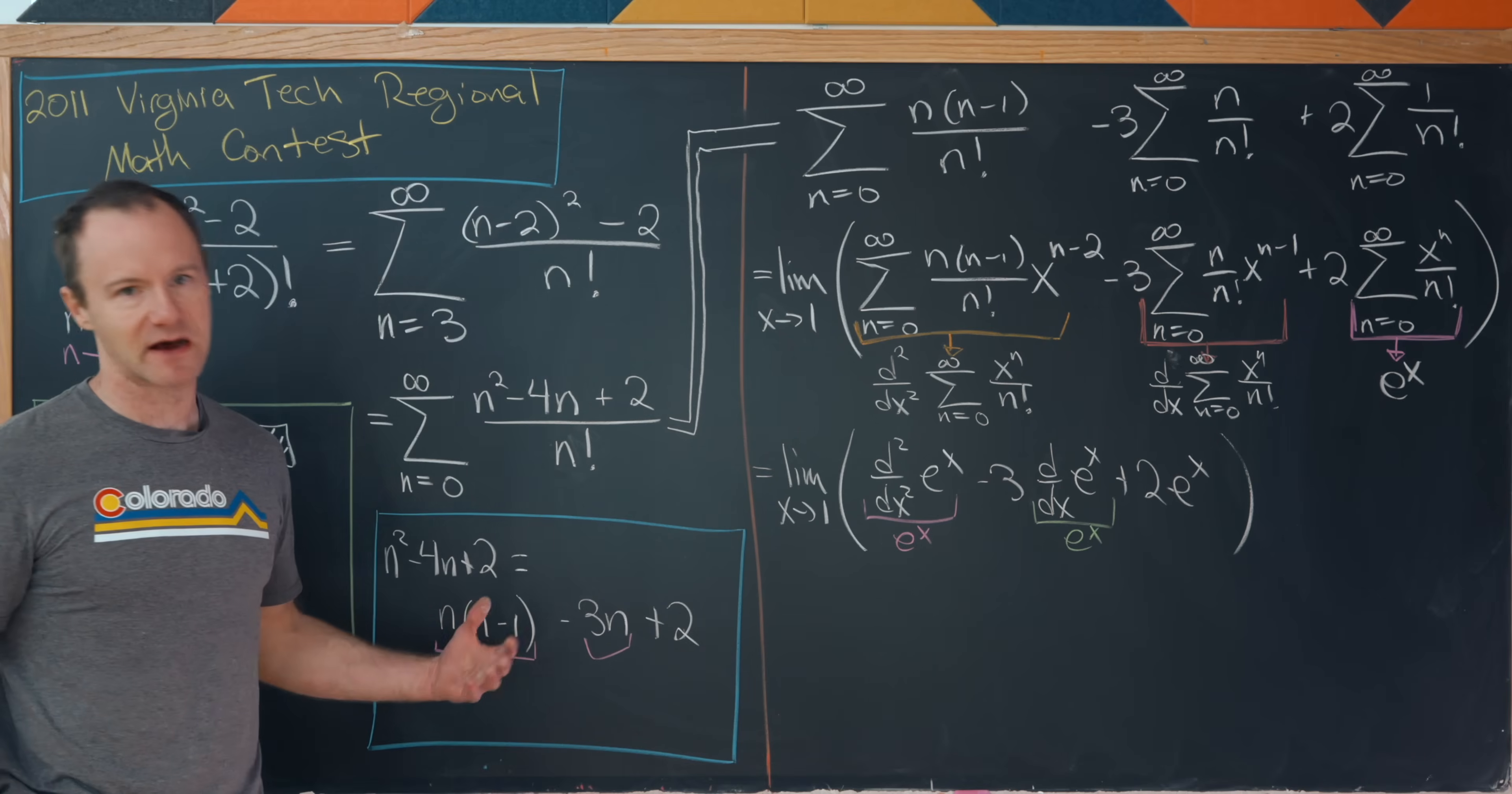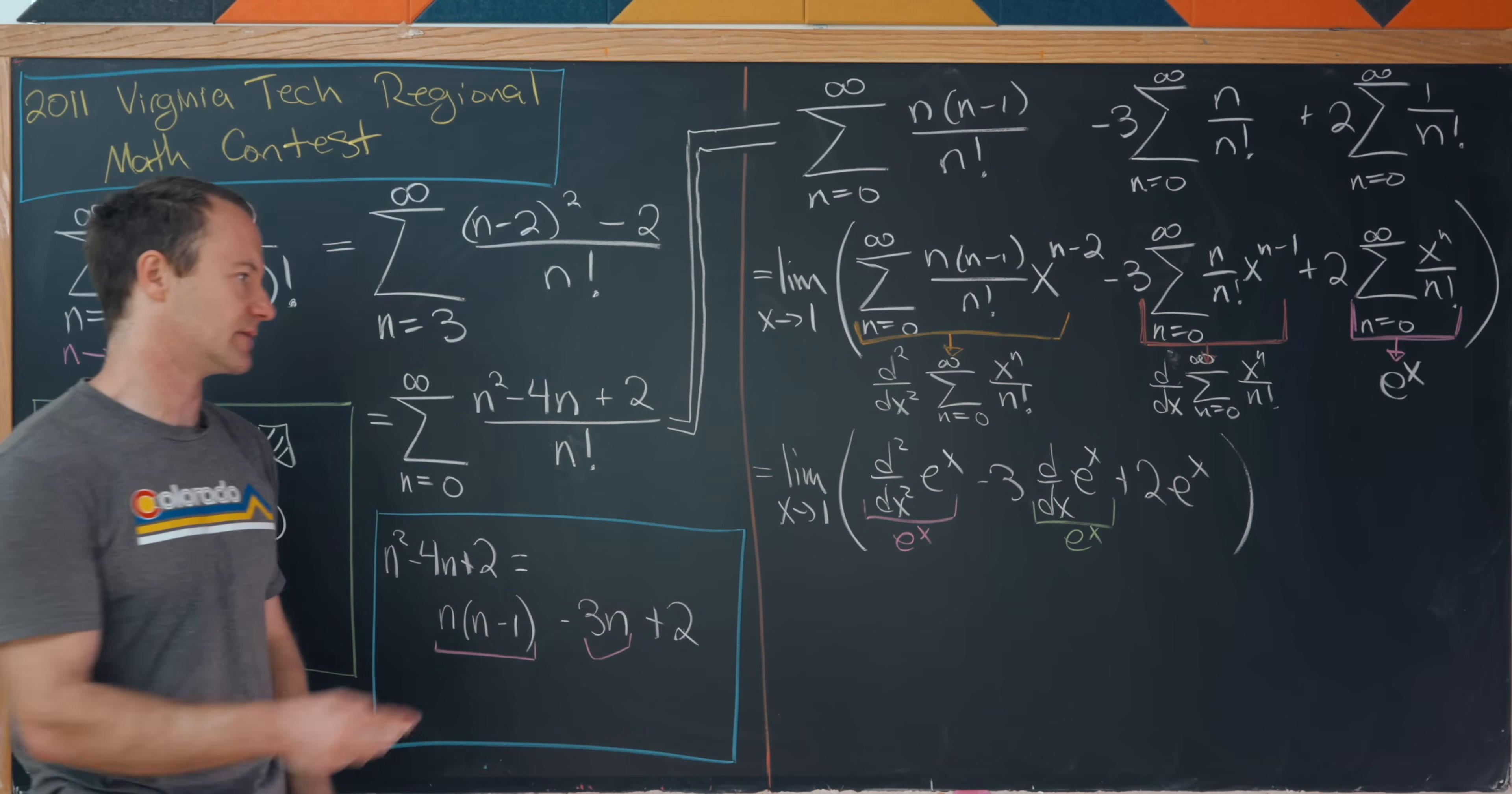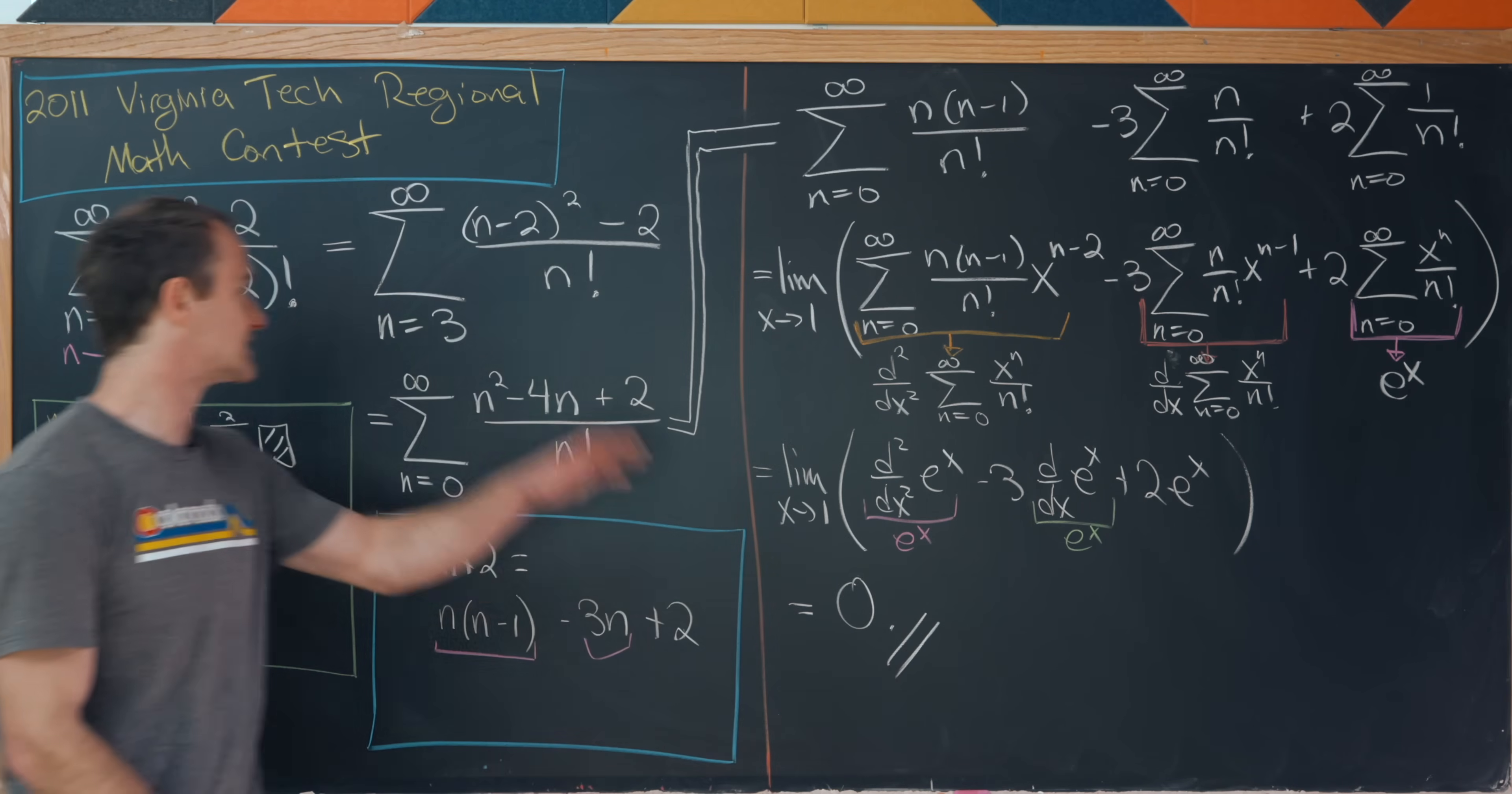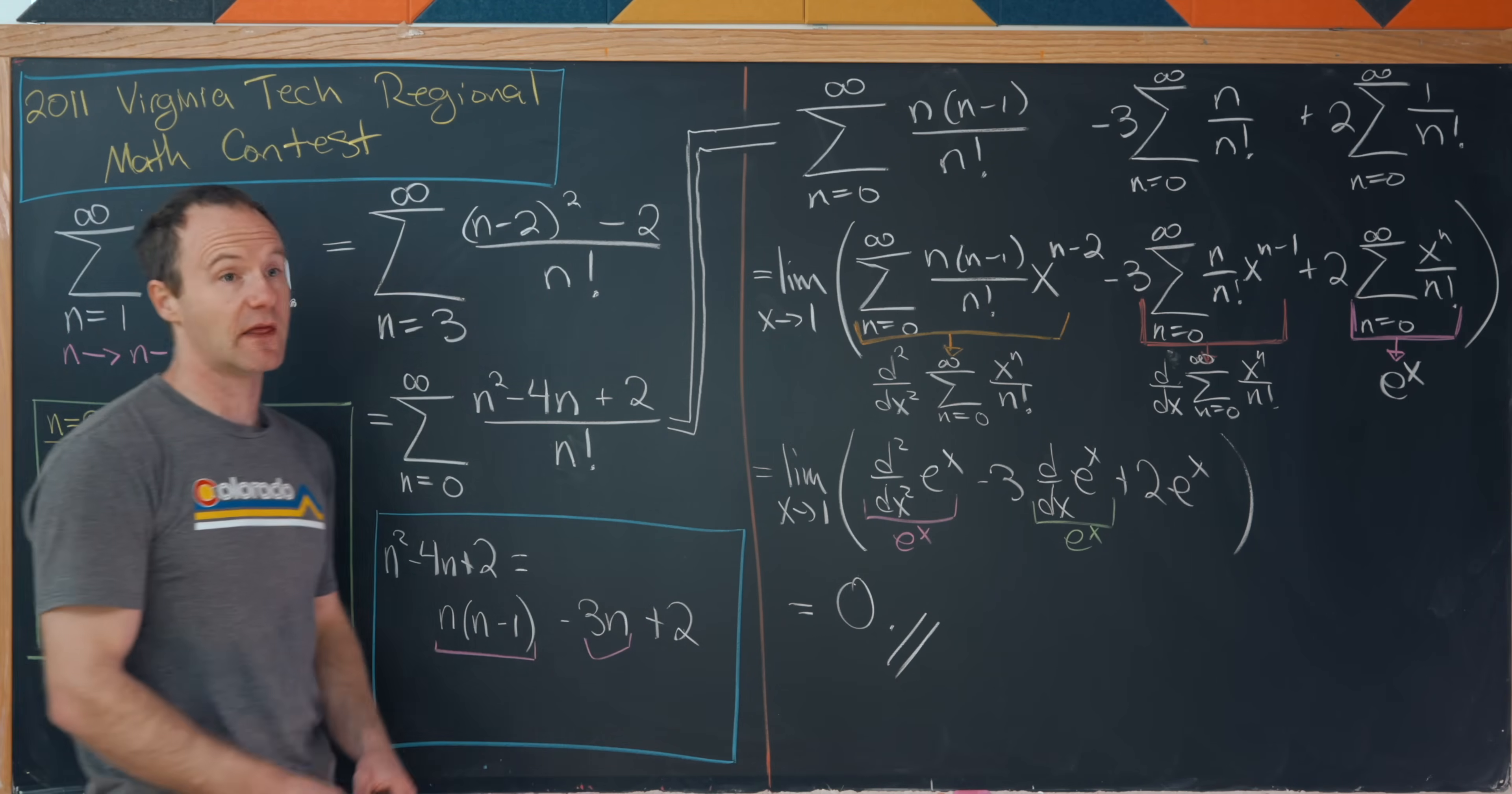And then we don't even need to think about taking the limit because we already have something that's equal to zero. But in the end we clearly get zero here. And that's our final solution. And that's a good place to stop.